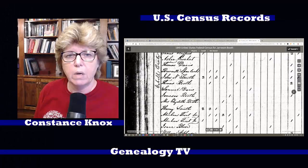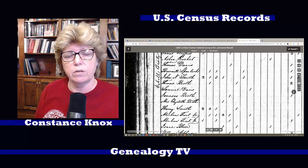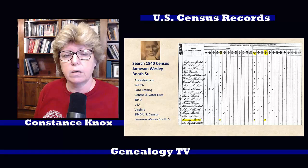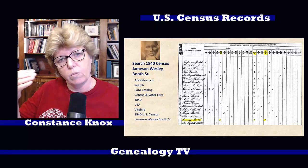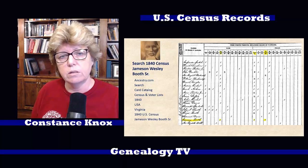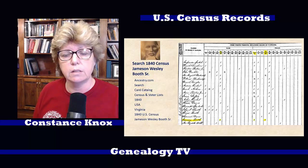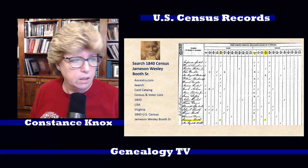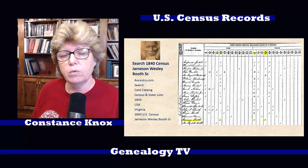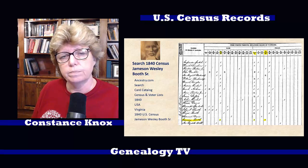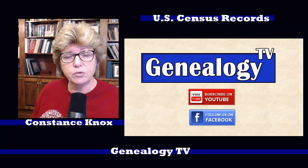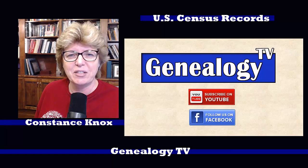That is my method of reverse engineering how you can find someone in the 1840 and earlier censuses. Work backwards and make sure you're consistently doing the work the same way. Once you find him in the 1830 census, you can use the same trick going further back. In this case Jameson will be a child in the 1830 census — he was about 20 in 1840, so he'd probably be about 10 in the next census back. I hope you enjoyed this episode about census records.